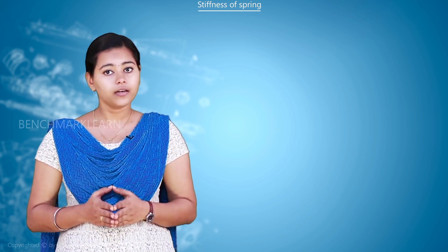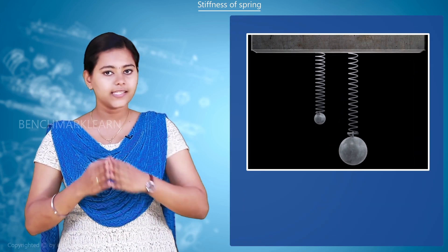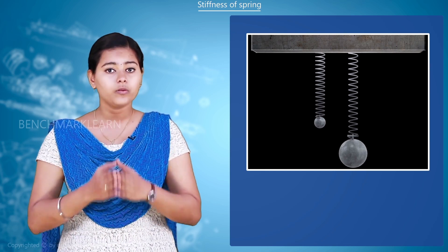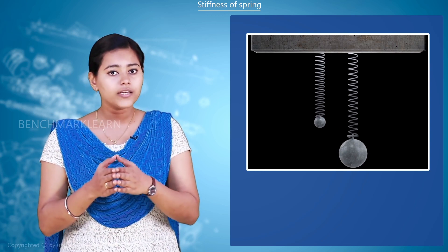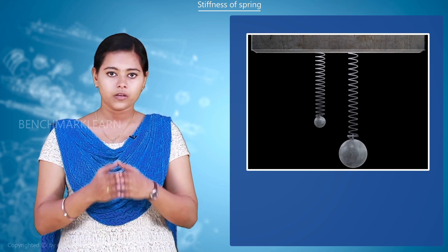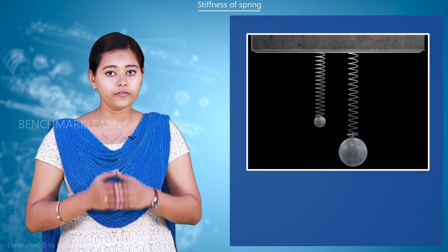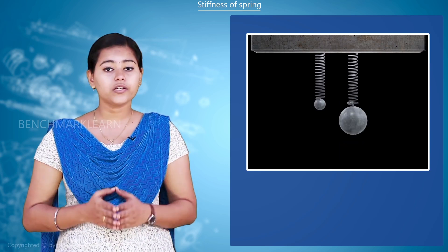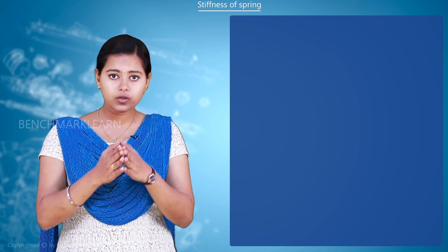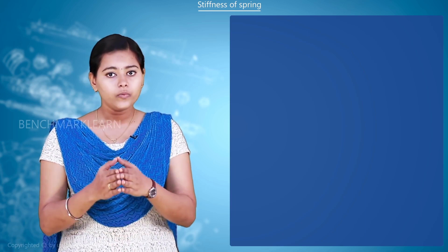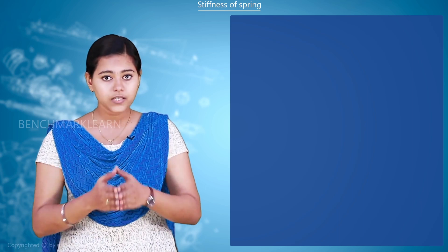When a spring is loaded, we are applying a force on it. Due to this force, the spring will be extended — there will be an elongation. If the applied force is small, the elongation will also be small. If the applied force is large, the elongation will also be large. So depending upon the force applied, we can get different values of elongation, and this force is proportional to the elongation.